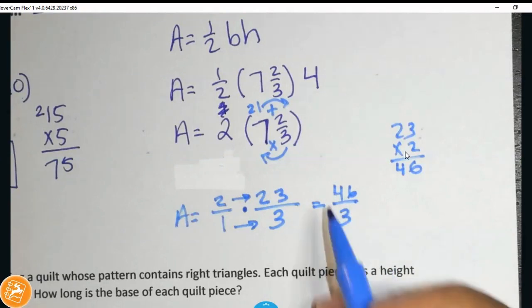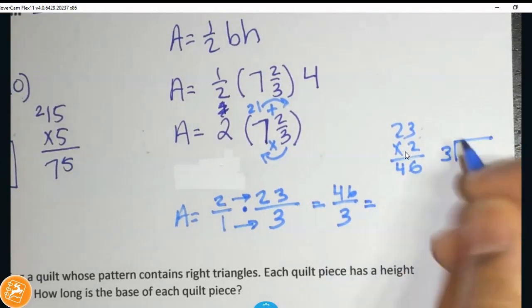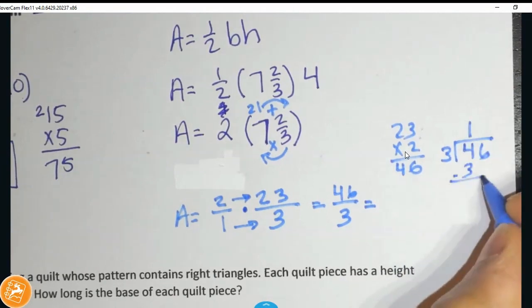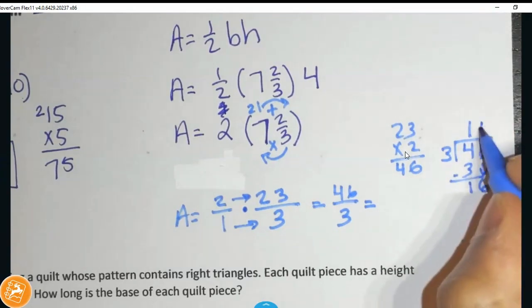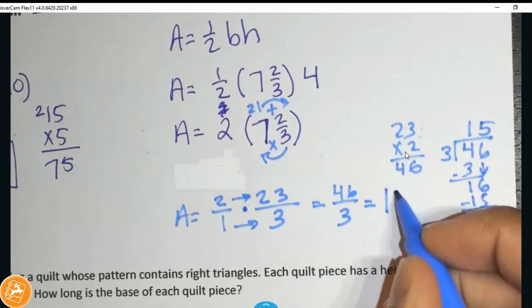So now, I need to convert this back to a mixed number. So I see, how many times can 3 go into 46? Well, it goes into 4 one whole time. And 16, well, the most number of times it can go in is 5.